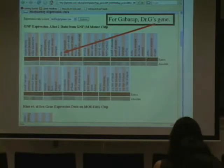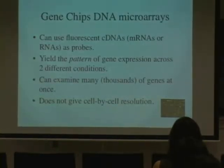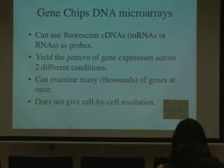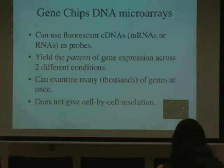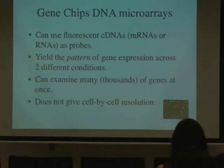We also talked about the fact that this expression data came out of something called DNA microarrays, or gene chips. We talked about how those are made — we used fluorescent cDNAs. What it gives us is the pattern of gene expression across different conditions. The way they got that relative expression was to look at cDNAs that came out of olfactory bulbs relative to a standard mix of genes. It allows us to look at thousands of genes at once.